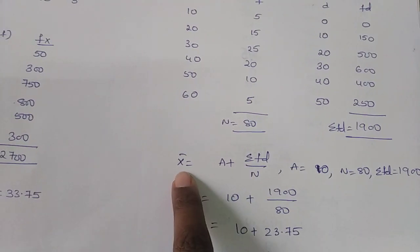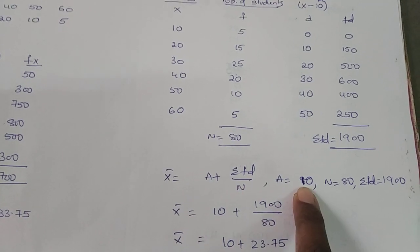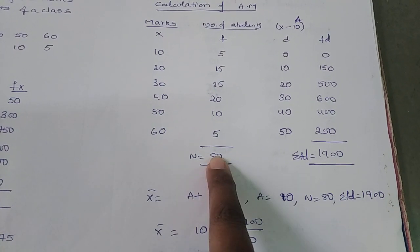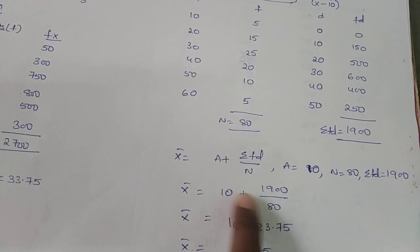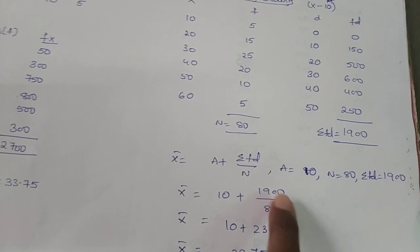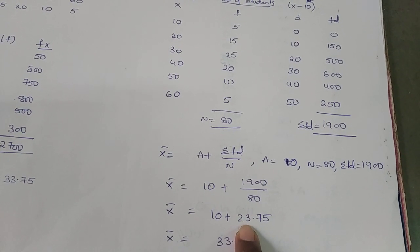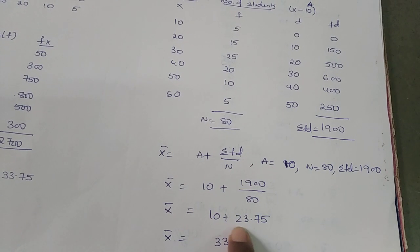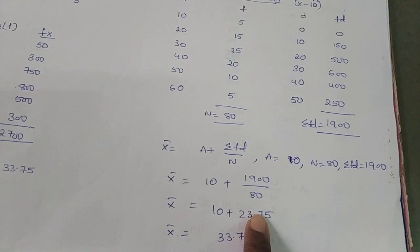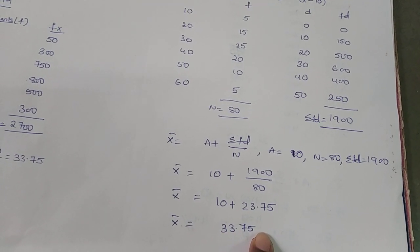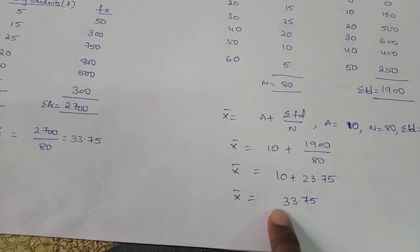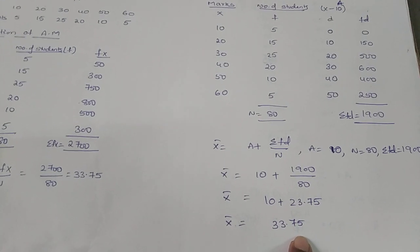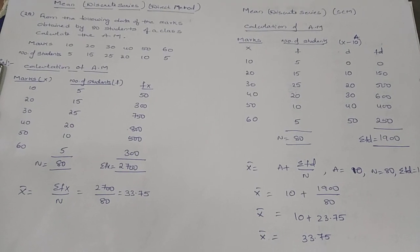Now apply the formula: Mean = A + σfd / n = 10 + 1900/80 = 10 + 23.75 = 33.75. In the direct method we also got 33.75, confirming the result. So this is how you calculate the mean for discrete series using both the direct and shortcut methods. If you have any doubts you can WhatsApp me. Bye.